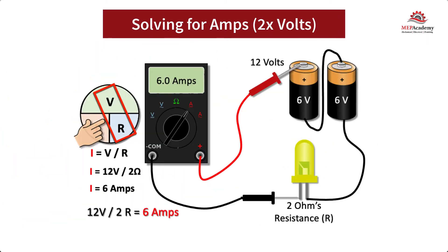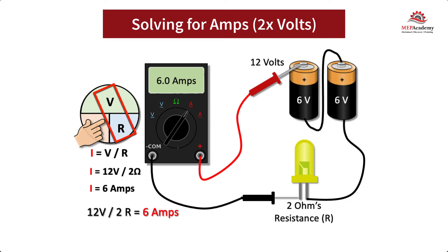Doubling the Voltage: by putting batteries in series, you add up the total voltage. As shown in this example, two 6 Volt batteries in series equal 12 Volts. By doubling the Voltage and keeping the Resistance the same, we have effectively doubled the Amps. We now have 12 Volts divided by the same 2 Ohms of Resistance to get twice as many Amps as previously — 6 Amps instead of 3.